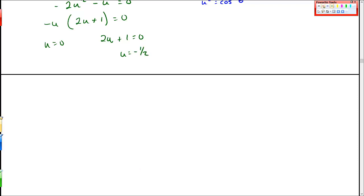And again, resubstitute. So I have cosine theta equals 0 and then cosine theta equals negative 1 half.